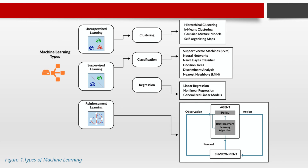The final type is reinforcement learning — a feedback-based learning method in which a learning agent gets a reward for each right action and gets a penalty for each wrong action. The agent learns automatically with these feedbacks and improves its performance. The agent interacts with the environment and explores it, with the goal of getting the most reward points and hence improving its performance. A robotic dog that automatically learns the movement of its limbs is an example of basic reinforcement learning.